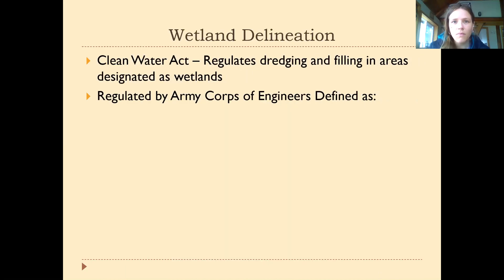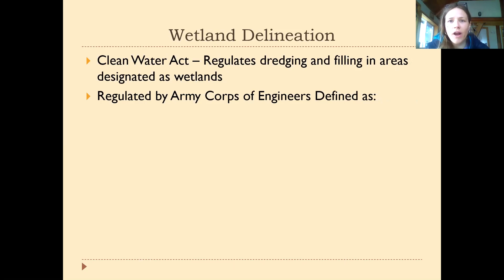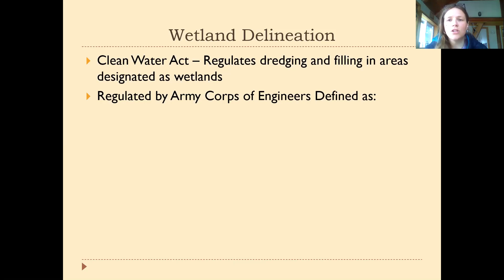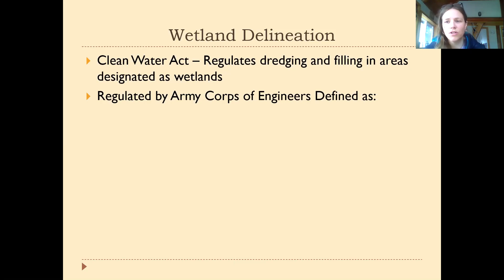The Clean Water Act is the federal piece of legislation that's supposed to protect water, and in doing so it also has authority to protect wetlands — important habitats where water exists, providing services of water purification and flood control. It regulates dredging and filling in areas designated as wetlands, so you're not supposed to destroy wetlands. However, there's some gray area — in some cases you can destroy wetlands as long as you protect them in other areas — but the basic idea is that wetlands should be protected.